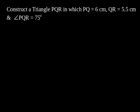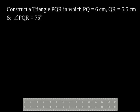Construct a triangle PQR in which PQ is equal to 6 cm, QR is equal to 5.5 cm and angle PQR is equal to 75 degree.